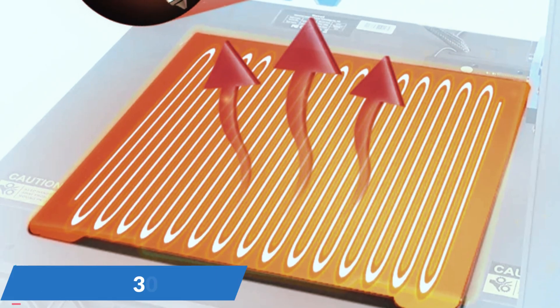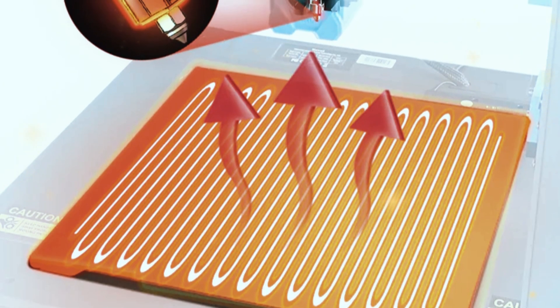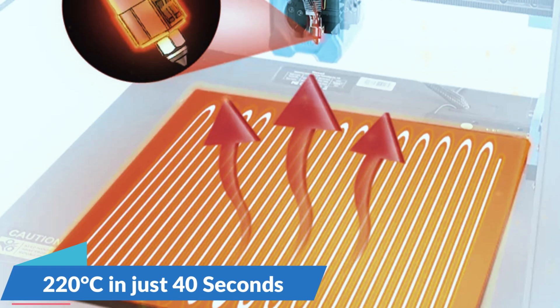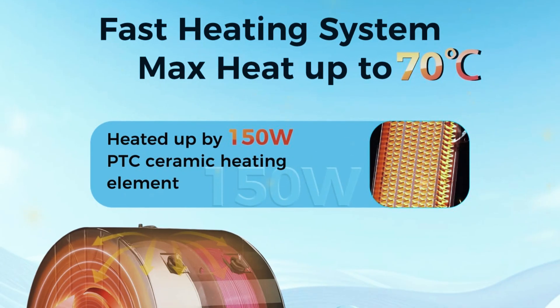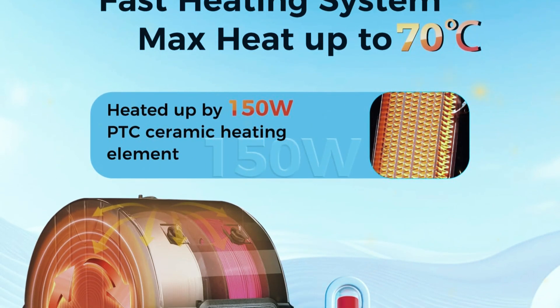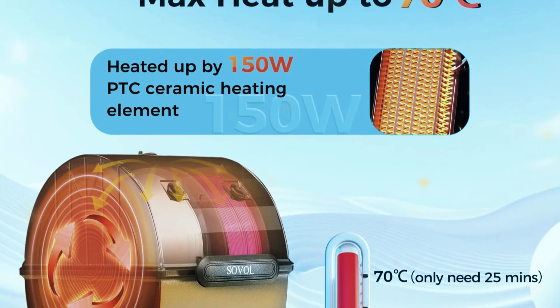The heating system on the SV-08 is equally impressive, allowing the hot end to reach 300 degrees Celsius in no time and the bed to heat to 220 degrees Celsius in just 40 seconds. This quick heat-up time means less waiting and more printing, which is a huge plus if you're on a tight schedule.